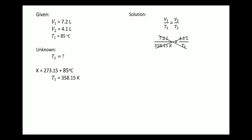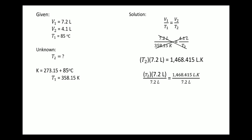Cross multiply: copy 7.2 liter and T2. Then, multiplying 358.15 Kelvin times 4.1 is equal to 1,468.415 liter·Kelvin. To find T2, divide both sides by 7.2 liter, cancel it on the left side, then cancel liter on the right side. 1,468.415 Kelvin divided by 7.2 is equal to 203.95 Kelvin.